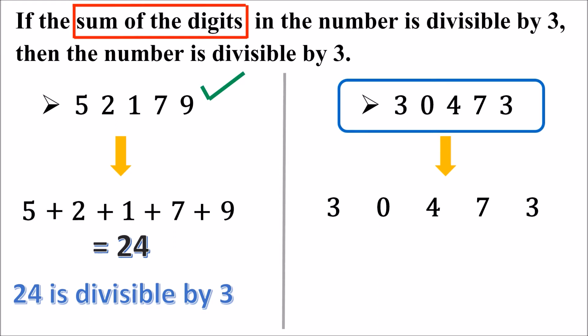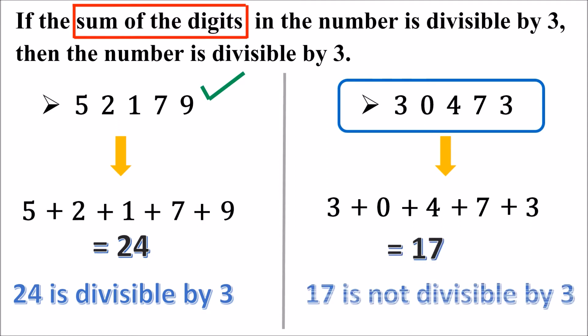Now we will add all the digits. 3 plus 0 is 3, 3 plus 4 is 7, 7 plus 7 is 14, and 14 plus 3 is 17. Is 17 divisible by 3? No, 17 is not divisible by 3 because 17 is not a multiple of 3. As the sum of all the digits of this number is not divisible by 3, the number is not divisible by 3.